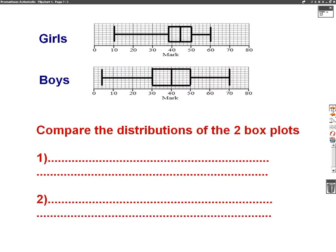So here is our question. The first box plot shows information for the girls. The second box plot shows information about the boys. The question says, compare the distributions of the two box plots.